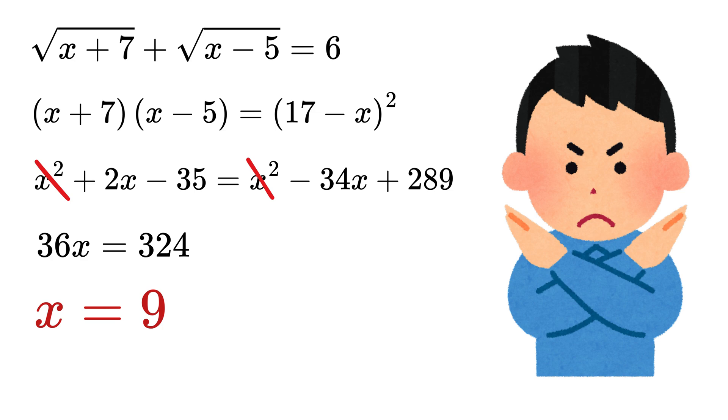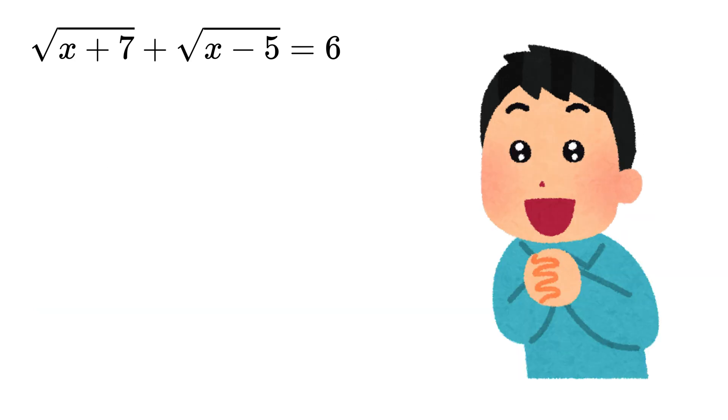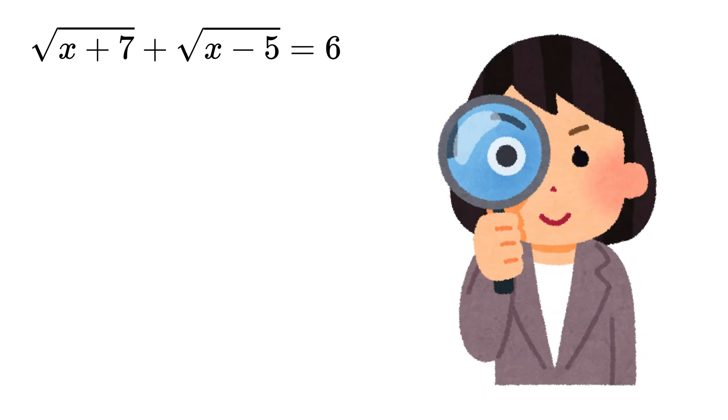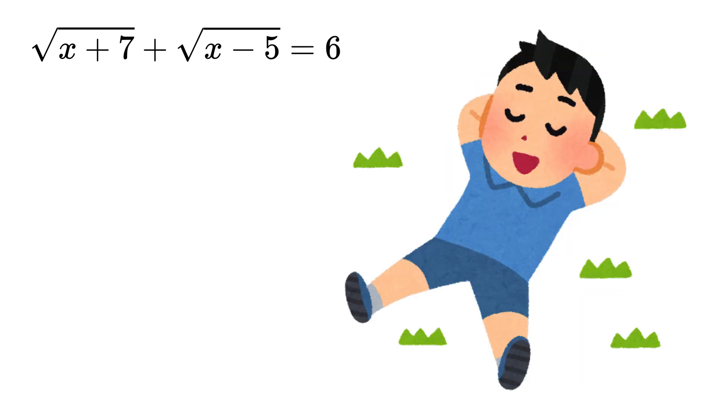So instead, I've come up with a shorter and cleaner trick that avoids all that heavy algebra. It uses a simple observation, and once you see it, you will be like, oh, that was so obvious. Why didn't I think of that?